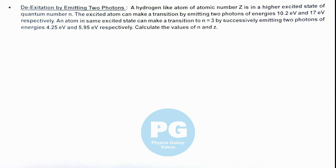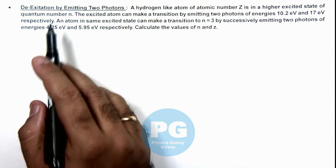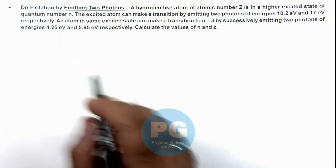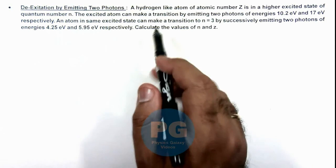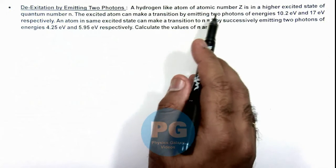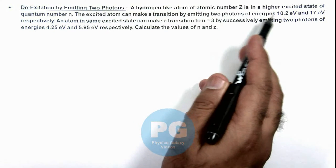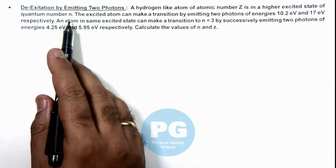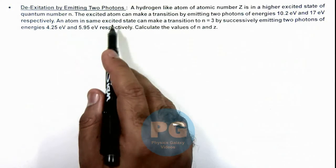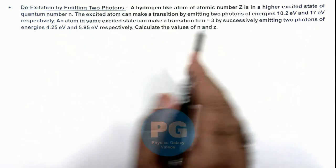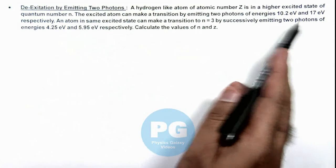In this illustration we'll study about the de-excitation by emitting two photons. Here we are given that a hydrogen-like atom of atomic number z is in a higher excited state of quantum number n. The excited atom can make a transition by emitting two photons of energies which are given here.